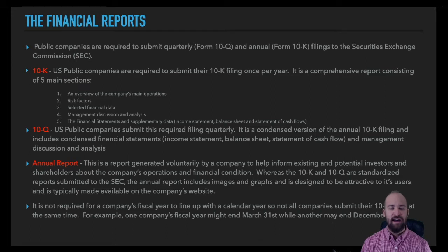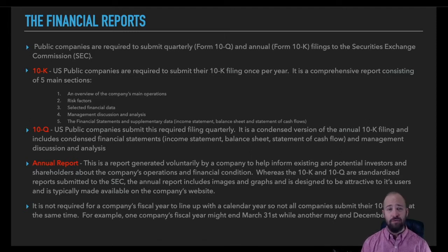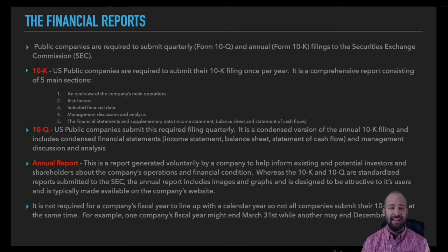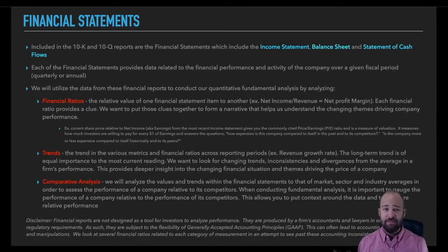Beyond that, we have the quarterly filing known as the 10-Q. It's a condensed version of the annual 10-K filing and includes condensed financial statements and management discussion and analysis. Both the 10-K and the 10-Q are required filings to the Securities and Exchange Commission. Many publicly traded companies also create and make available an annual report, which is generated voluntarily and is usually available on their website. You can think of the annual report as something of a brochure to keep existing shareholders up to date on business operations as well as a way to attract new investors. Realize that an annual report does not have any regulatory requirements and is generally aimed at painting the company in a favorable light.